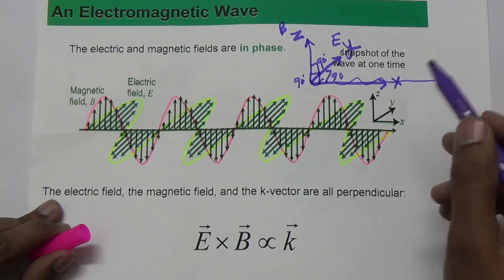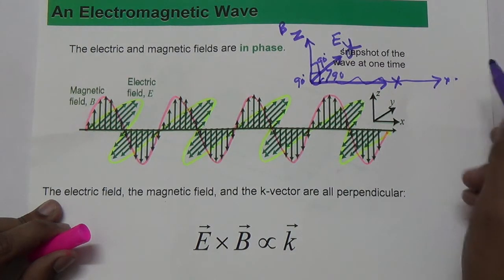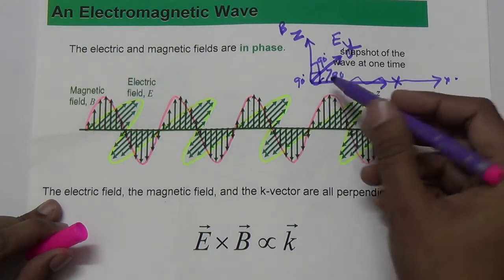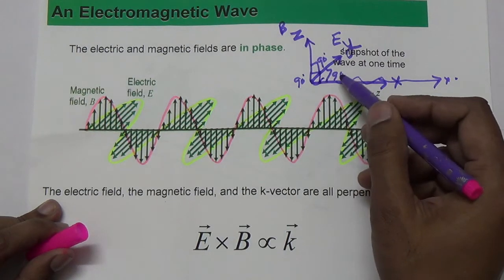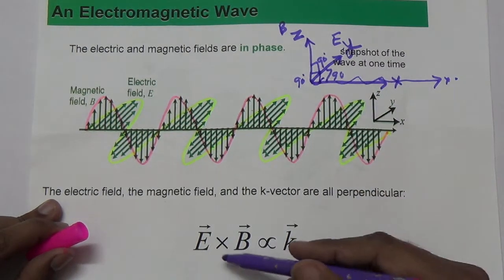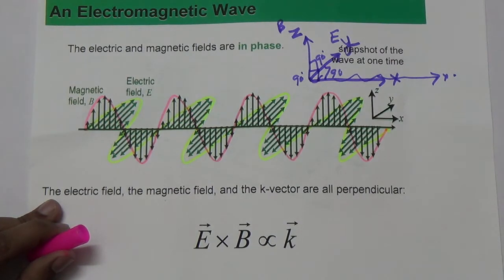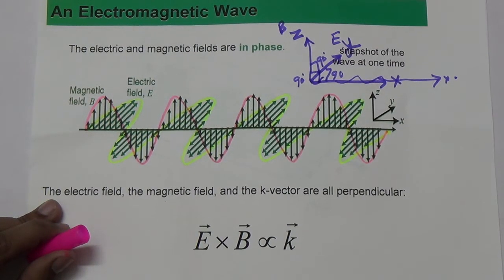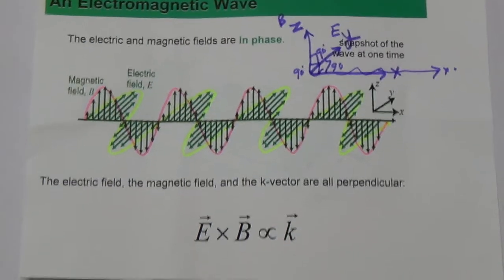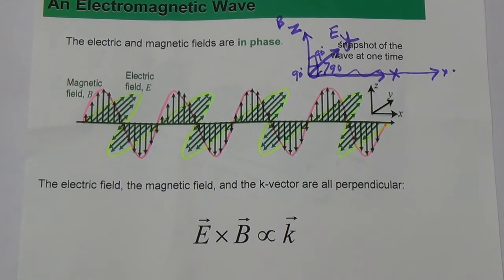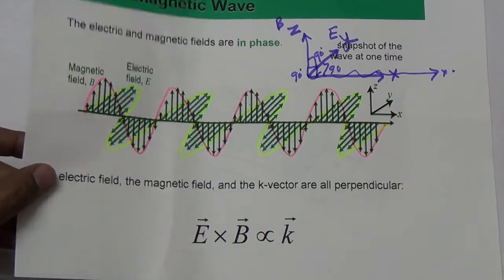The electric field is along the y-direction, the magnetic field component is along the z-direction, so both are perpendicular to each other and also to the direction of propagation along the x-axis. The cross product E × B gives the vector k representing the direction of propagation.